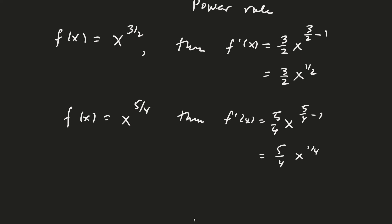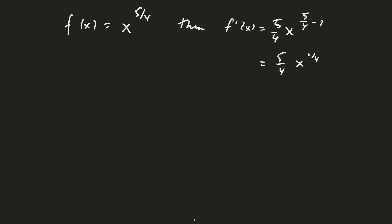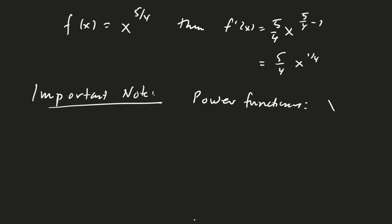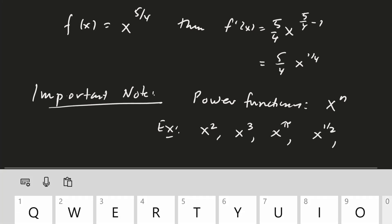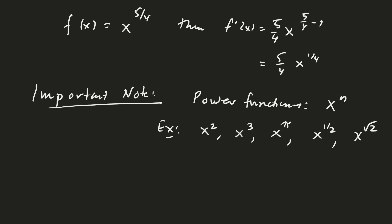This is known as the power rule. Important note: power functions are functions of the form xⁿ. Examples include x², x³, x^π (because π is a constant), x^(1/2), or x^(√2). These are different from exponential functions, so we want to distinguish between them.